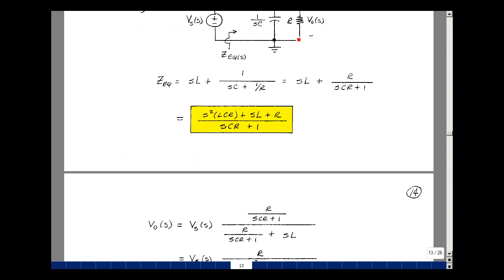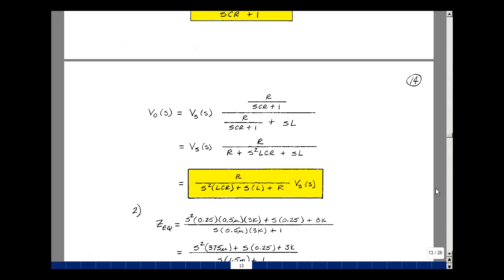To find the voltage across the load, we can do a voltage divider. That impedance over that impedance plus SL times the input gives the voltage across output resistance R. Cleaning this up, multiply numerator and denominator by SCR plus 1. We have R in the numerator, and S squared LCR plus SL plus R in the denominator. Putting this in descending order, here's the S squared term, S to the 1, S to the 0. This is V out of S in terms of our input V of S.